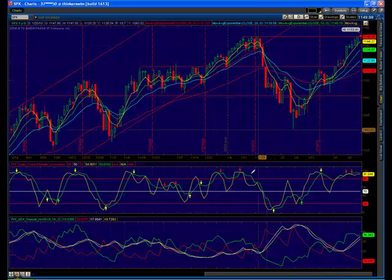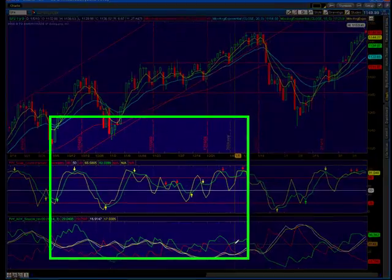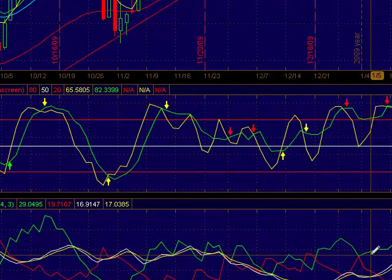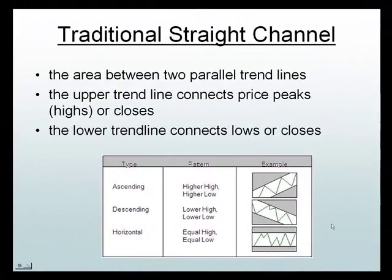Straight lines have great advantages as far as support and resistance and identifying breakouts. Hopefully you can see the advantage of straight channels: they give us specific targets that we can use, they provide great identifiers for support and resistance levels, and they help us identify breakouts.